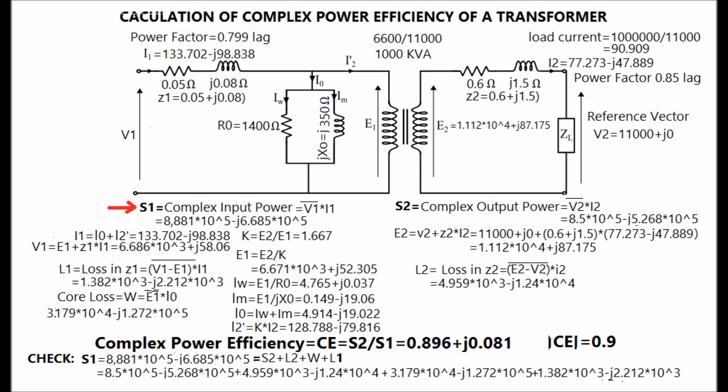The complex input power S1, V1 conjugate multiplied with I1, is calculated and given in the diagram. The core loss is also calculated, given as W in the diagram. The loss in the impedance Z1 is also calculated and given in the diagram.